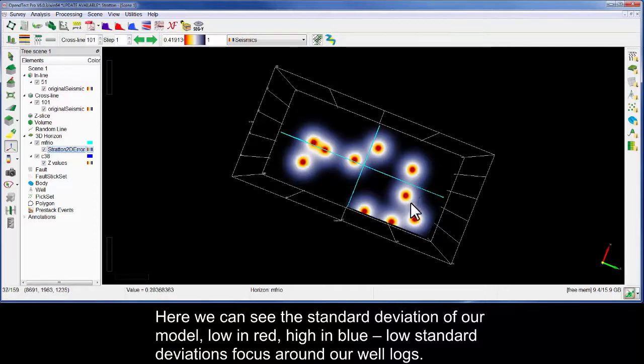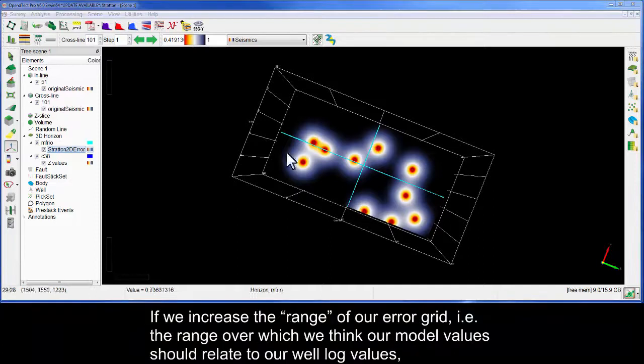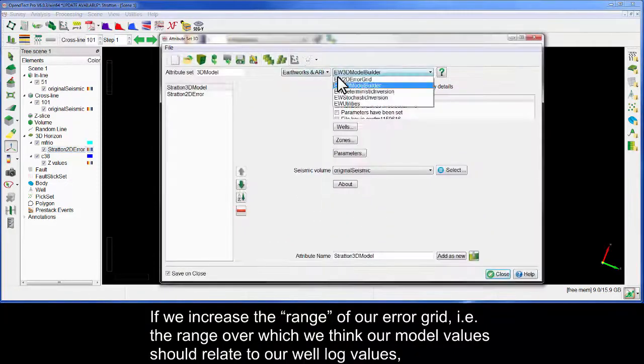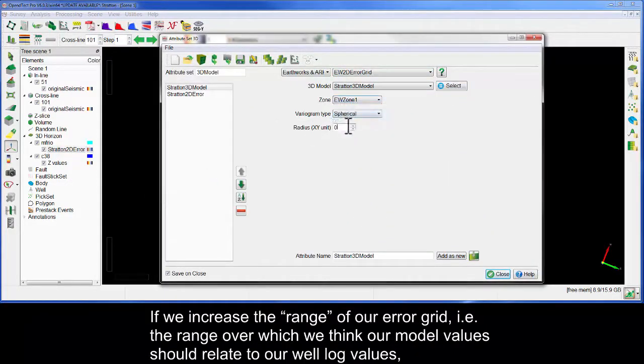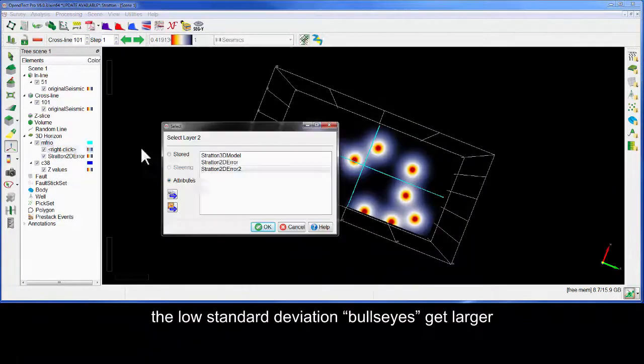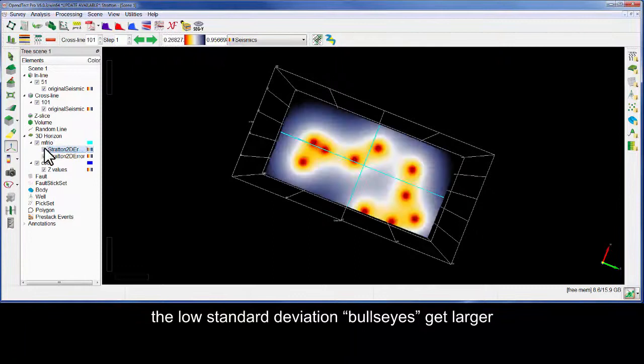Low standard deviations focus around our well logs. If we increase the range of our error grid, i.e. the range over which we think our model values should relate to our well log values, the low standard deviation bullseyes get larger.